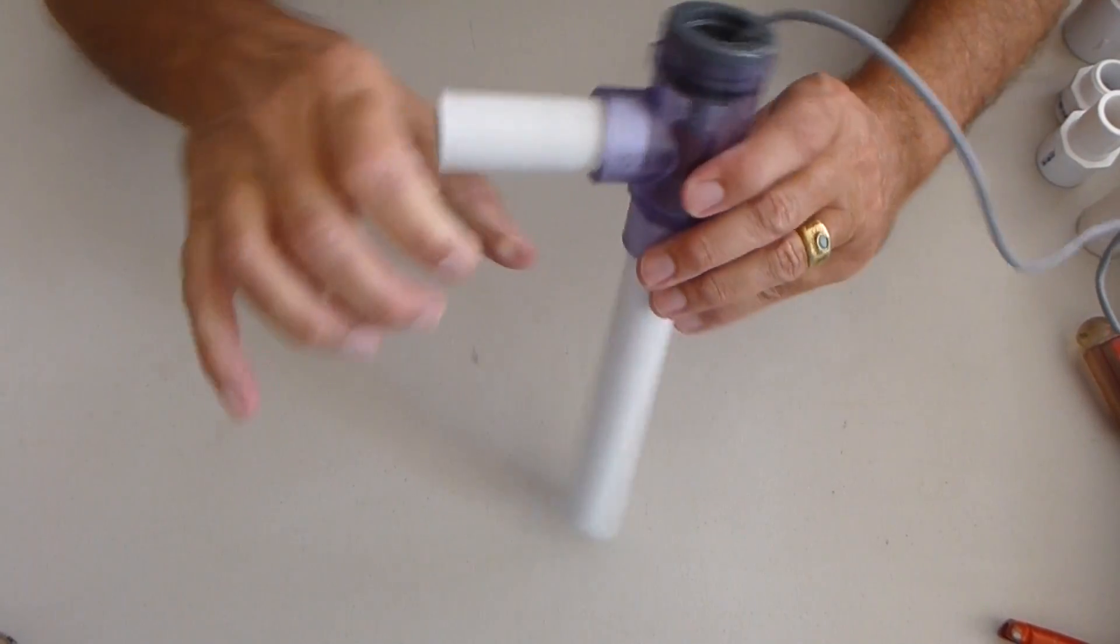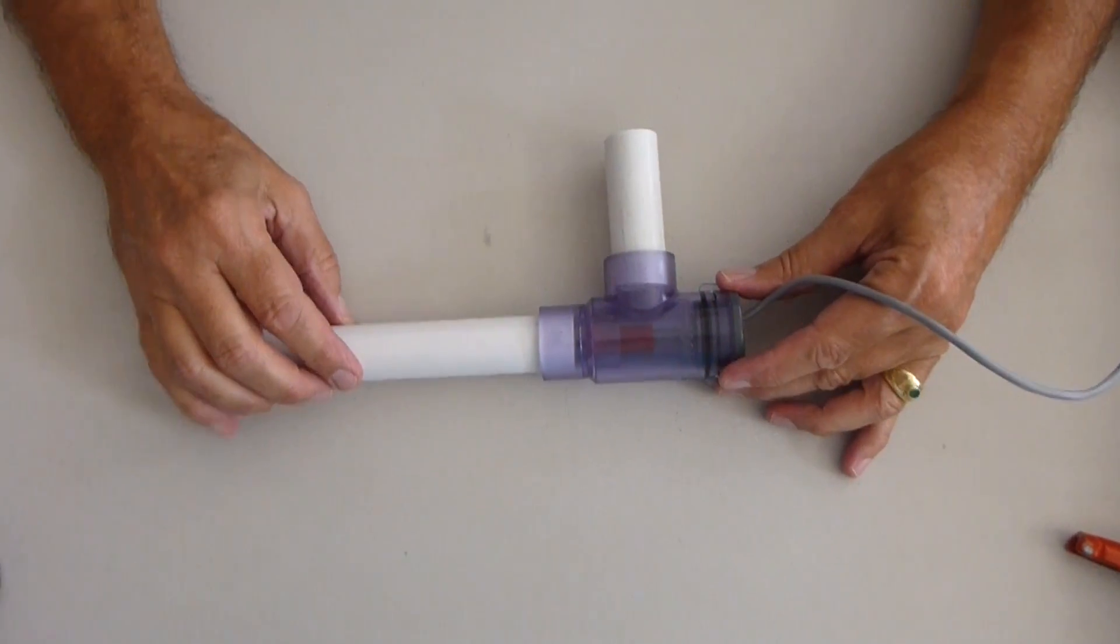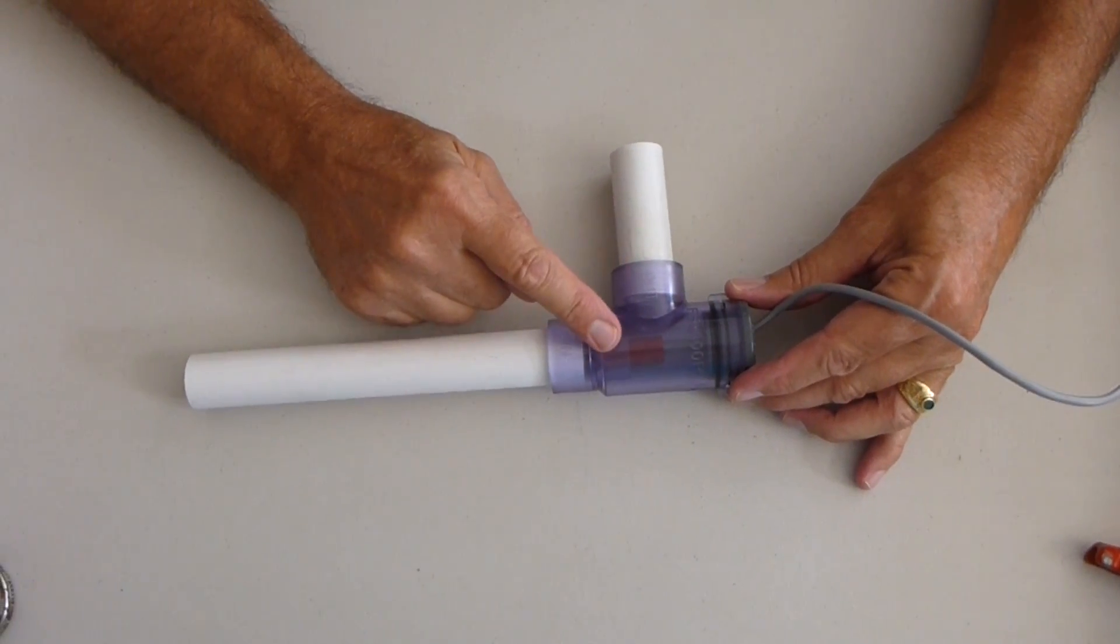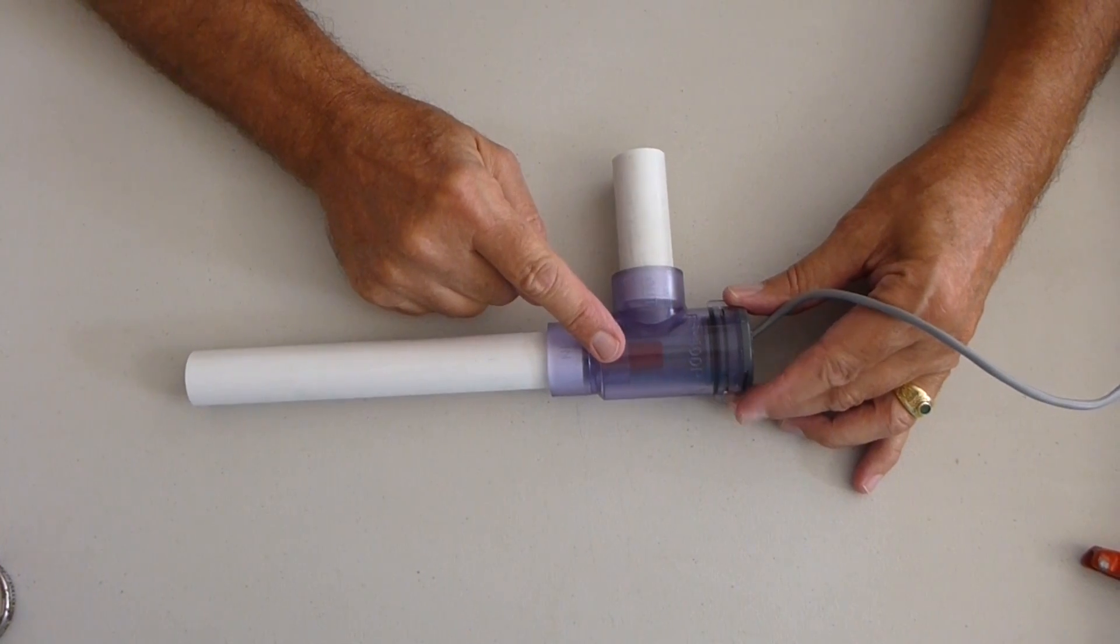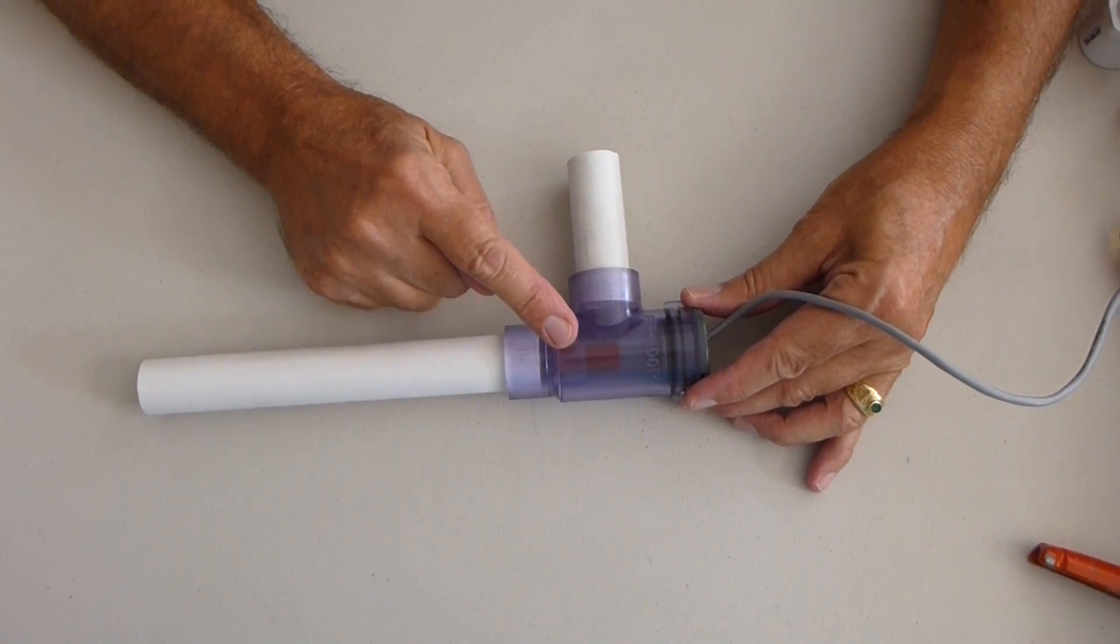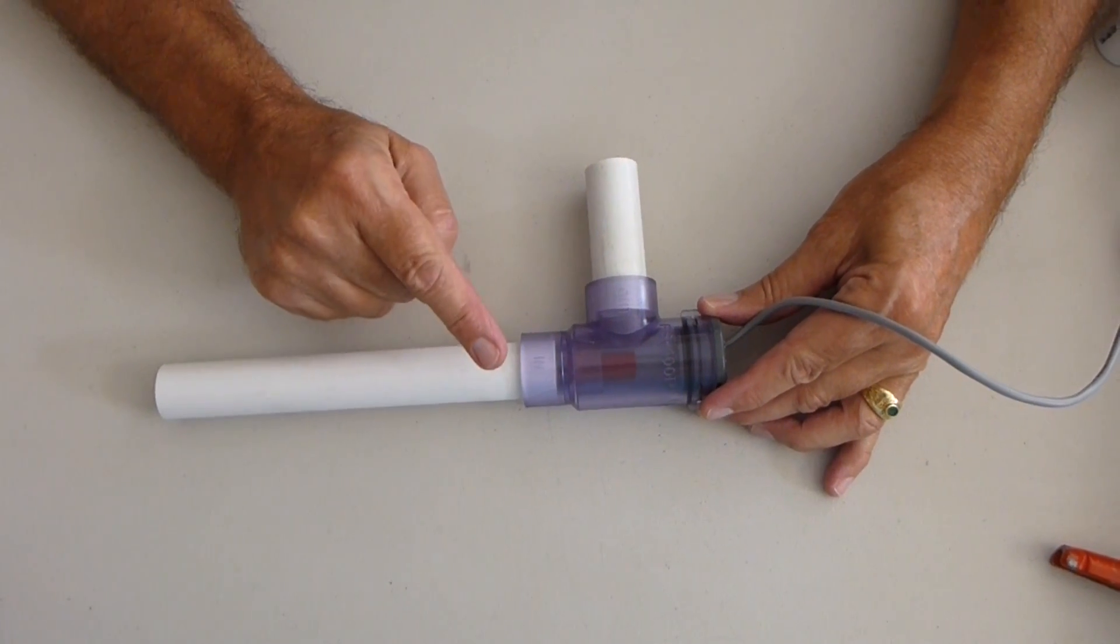Remember in the instructions, it tells you to keep this flow switch housing in between the retention tank and the filter.